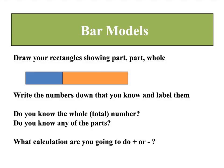As a quick summary, when doing bar models, draw your rectangles to show part, part, whole. You can draw them as we've been doing in this video, or sometimes in your maths book they also show a bracket with the whole number written over it — same idea, just written differently. Once you have drawn your two bars, write the numbers down that you know and label them. Do you know the whole or total number? Do you know any of the parts? And after that, think about which calculation you are going to do.